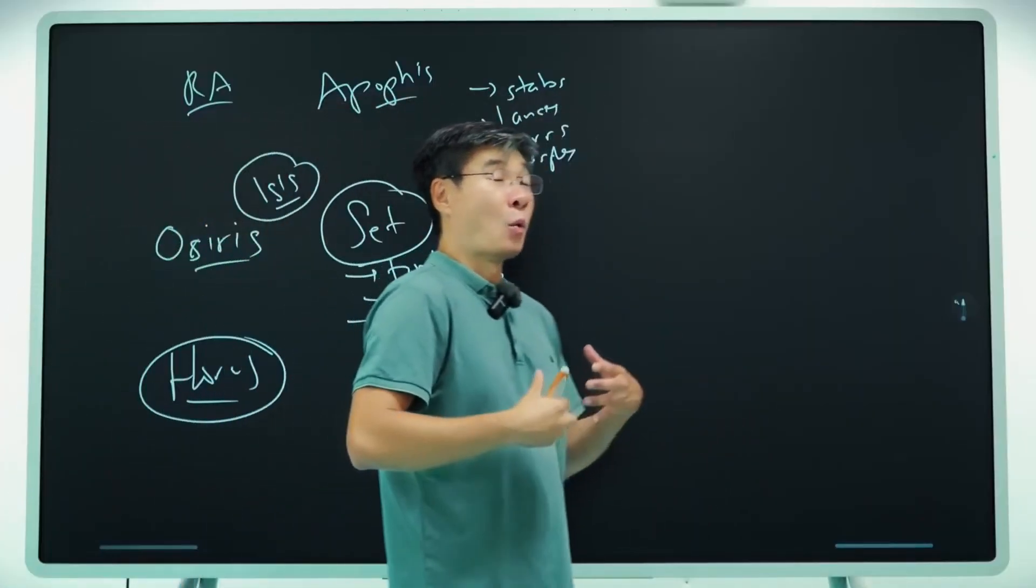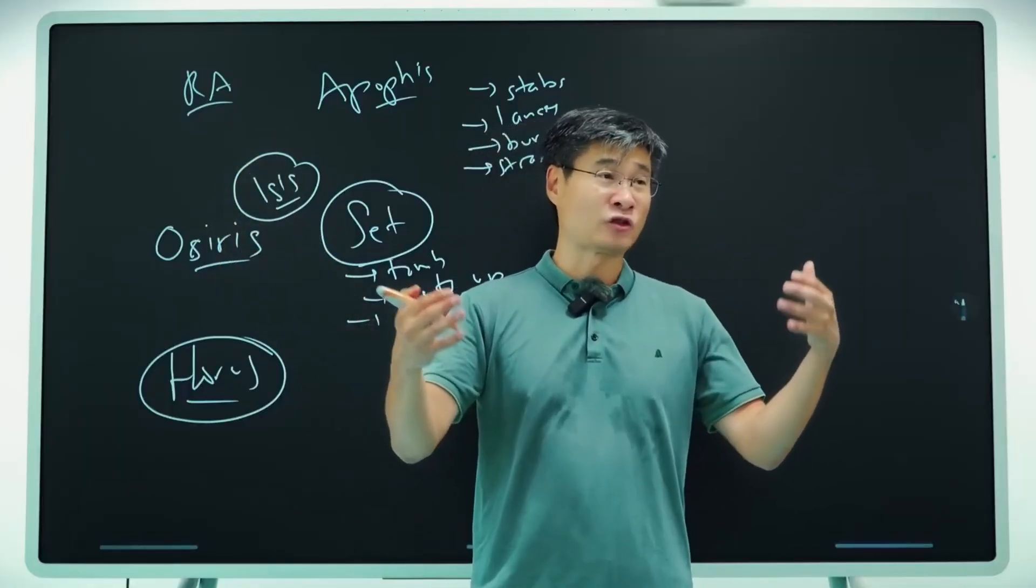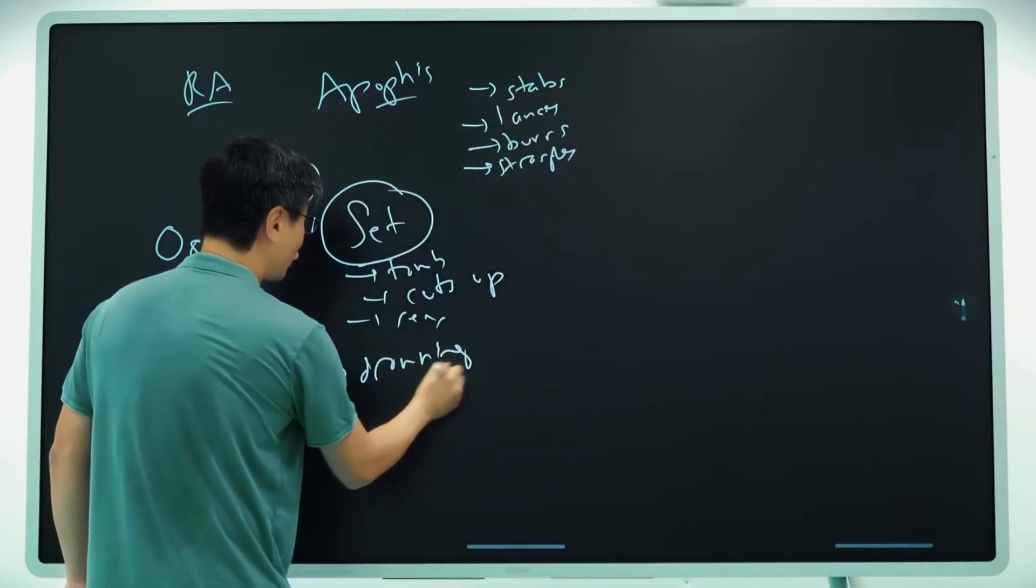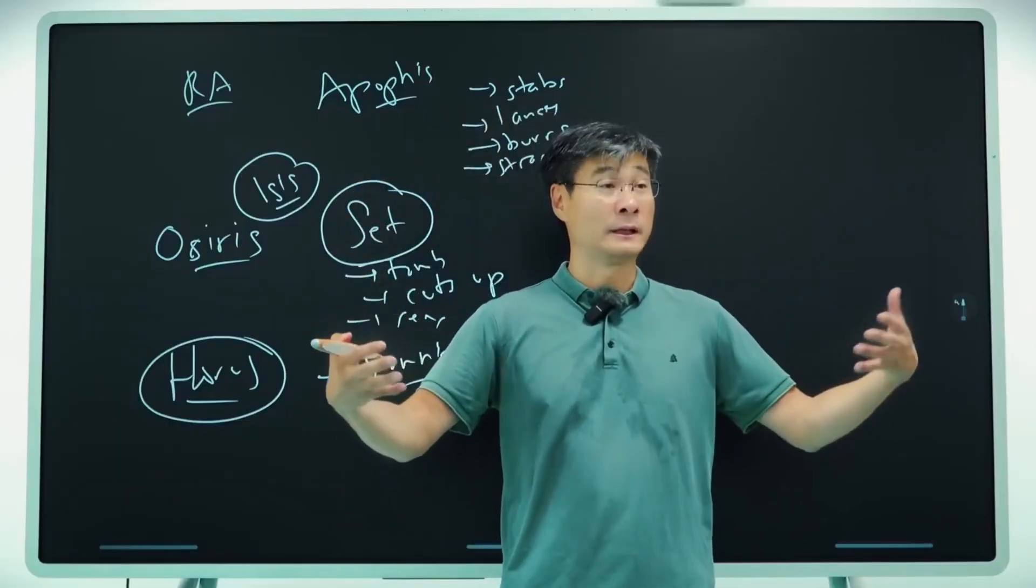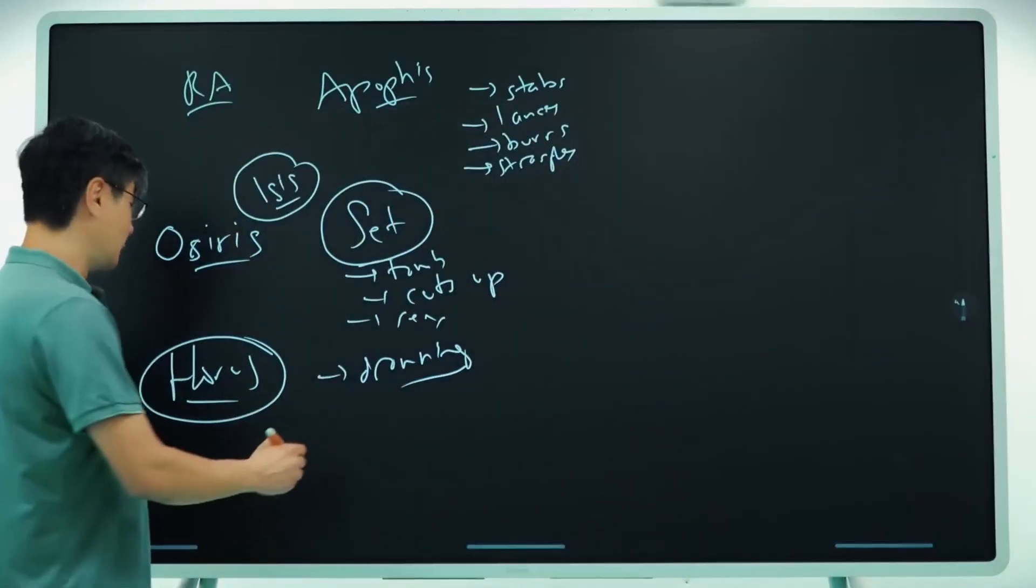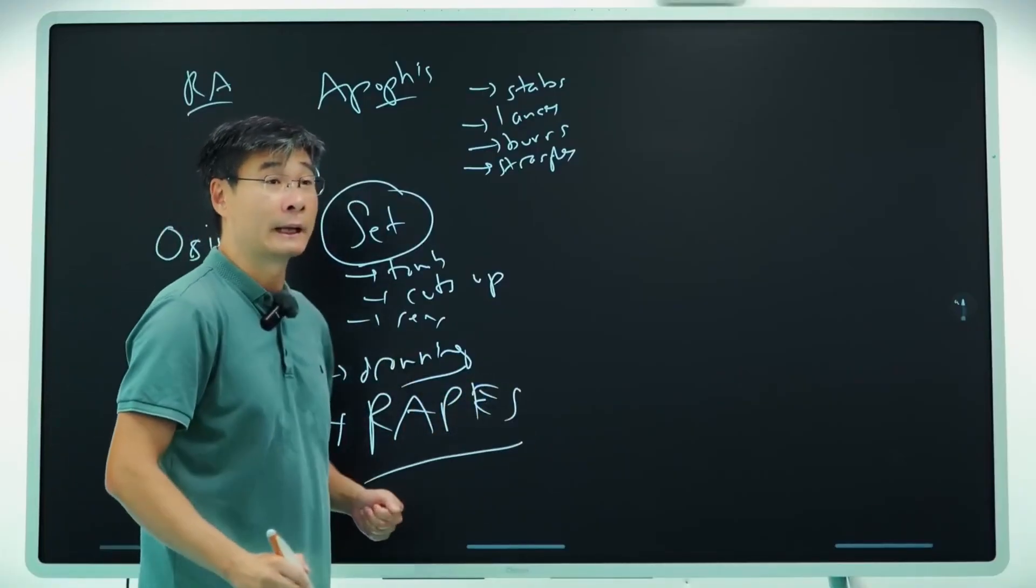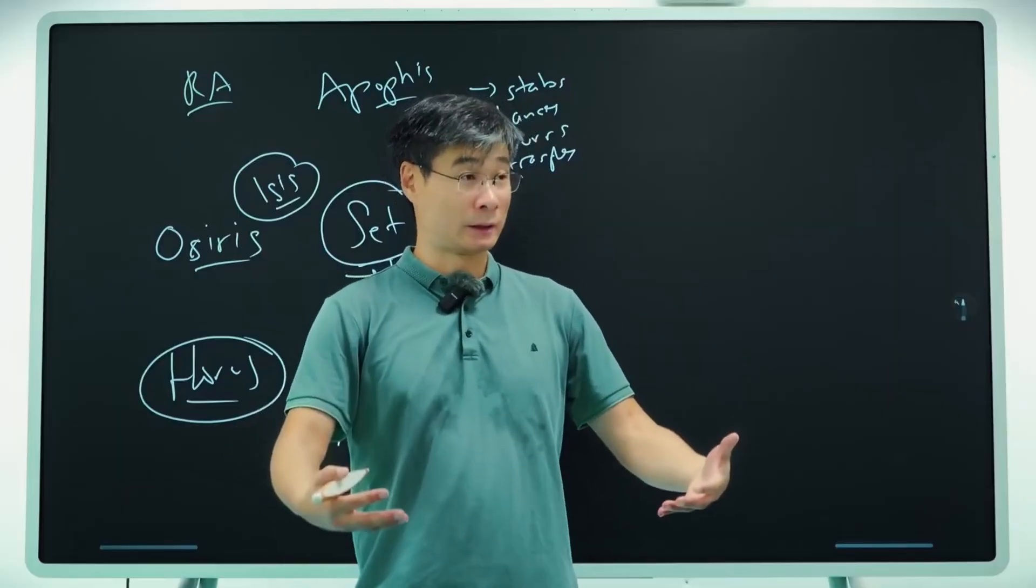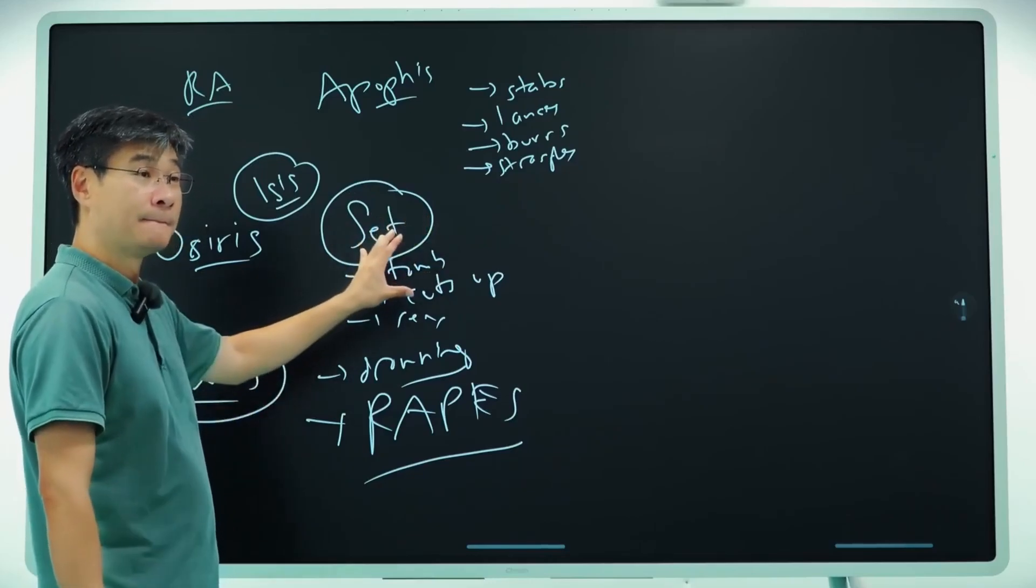And Horus wants the throne back. So he goes to war with Seth. And they have a series of challenges. And some of these challenges include drowning. So what they do is they turn each other into hippos, they go into the bottom of the river, and they see who can hold the breath the longest. They drown each other, basically. But also, there's a challenge where Seth, R-A-P-E, he will do this to Horus because it's a sign of domination. But eventually, Horus wins out. And he becomes the pharaoh.